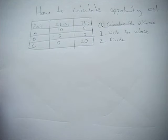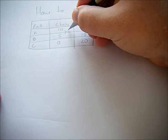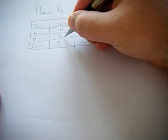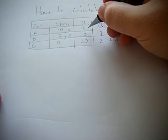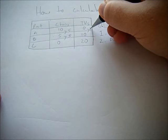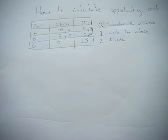By calculate the difference, I mean you take the difference between these points. Moving from A to B is a difference of 5 chairs. Moving from B to C is a difference of 5 chairs. For TVs, 0 to 10 is a difference of 10, and 10 to 20 is a difference of 10.